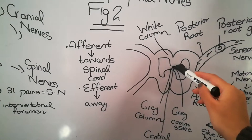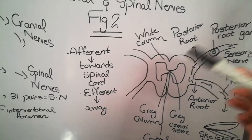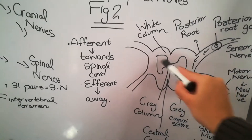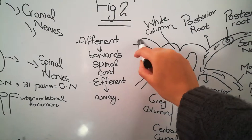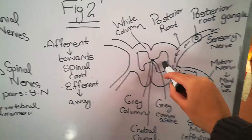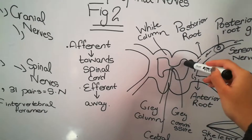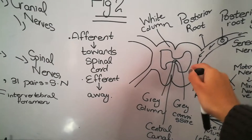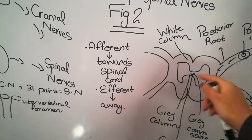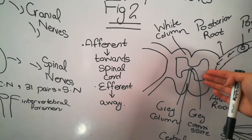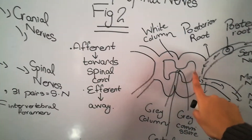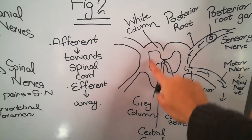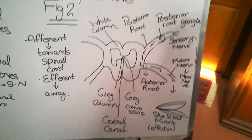In the gray matter, there is a commissure. A commissure is basically a crossing over of fibers — the fibers that enter from the left side will move towards the right side, or the fibers on the right side may move towards the left side. This crossing over of fibers from right to left or left to right is called the commissure, and as it is in the gray matter, it is called the gray commissure.